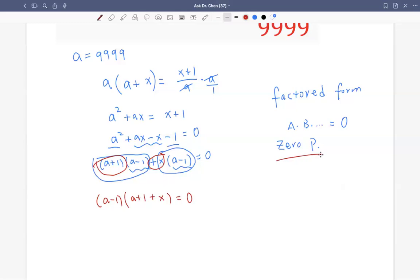So we use zero property. Zero property is saying, one of the factors, at least one of the factors has to be 0. Well let's see what is a minus 1. Remember a is 9,999 minus 1, that's 9,998.